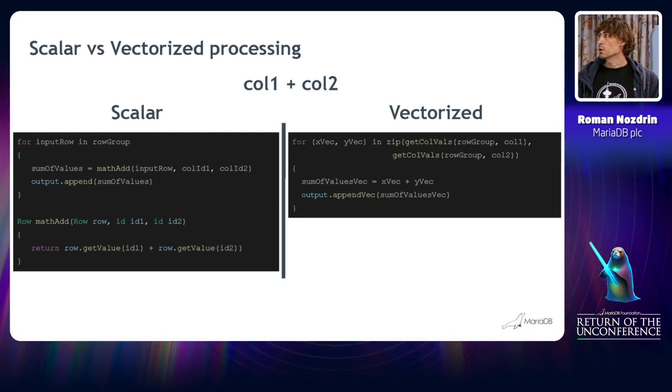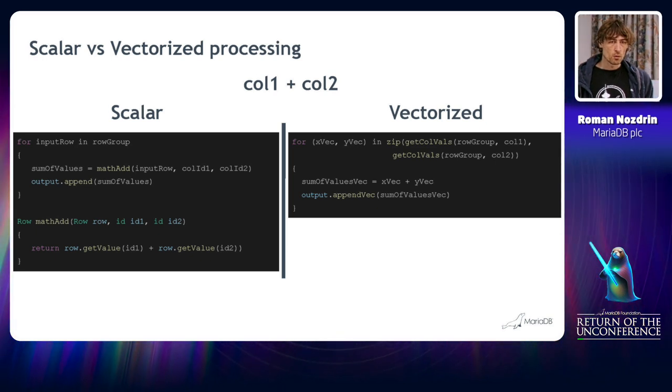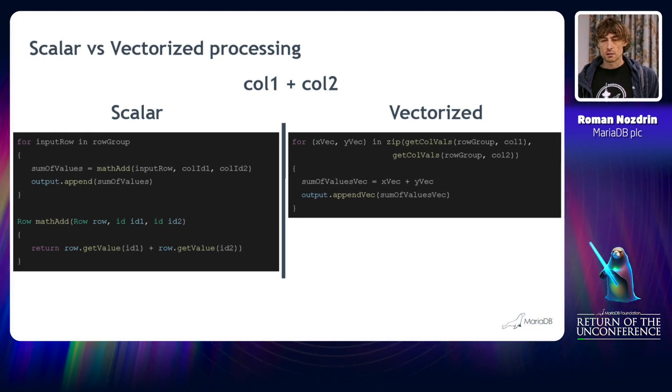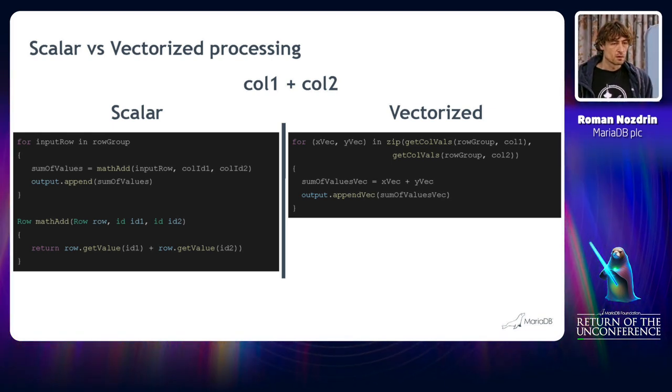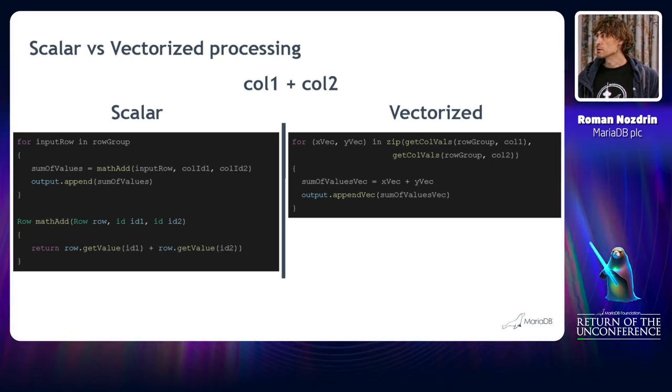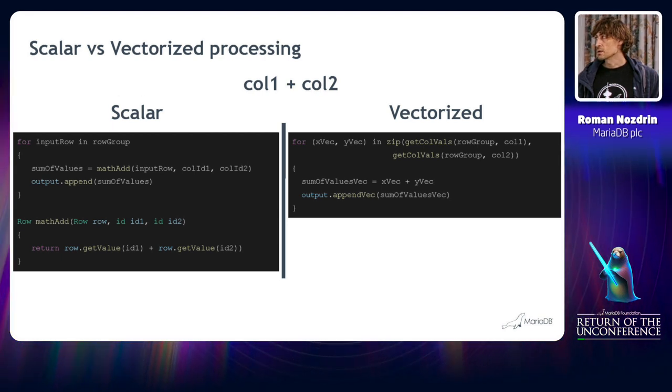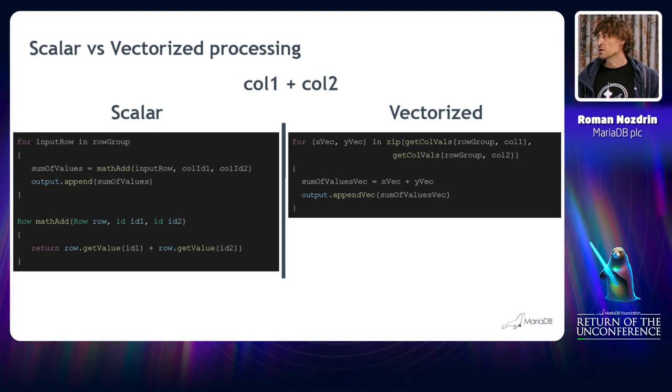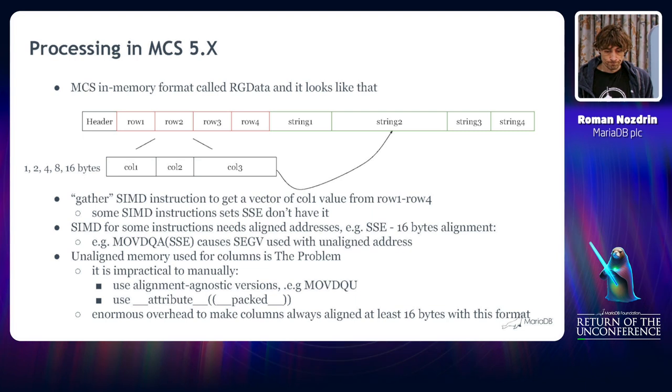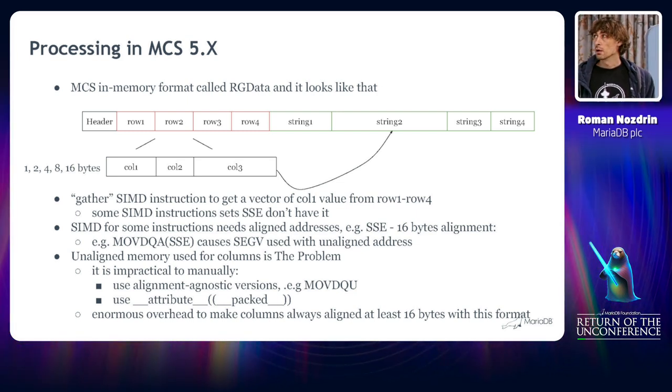In the vectorized world we iterate over the vector that might consist of a number of scalar values. It's usually the power of 2, like 2 values or 4 or 8 or 16. And we sum up these vectors. It is basically the same what algebra math does for vectors. We sum up separate scalar values of these vectors and in the end we have a vector that has these sums. And we take this vector and add it into the output. So basically we do let's say 4 or 8 or 16 math additions at a time.